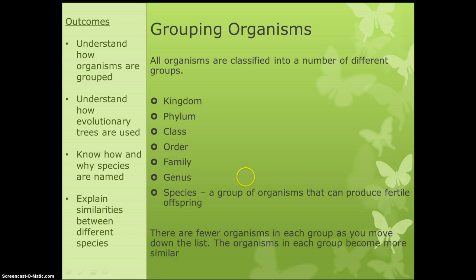We also need to know the definition for species. Species is a group of organisms that can produce fertile offspring. The idea is that the further down the list we go, the fewer organisms there are in each group, until you get down to species, which is just a very small subset.